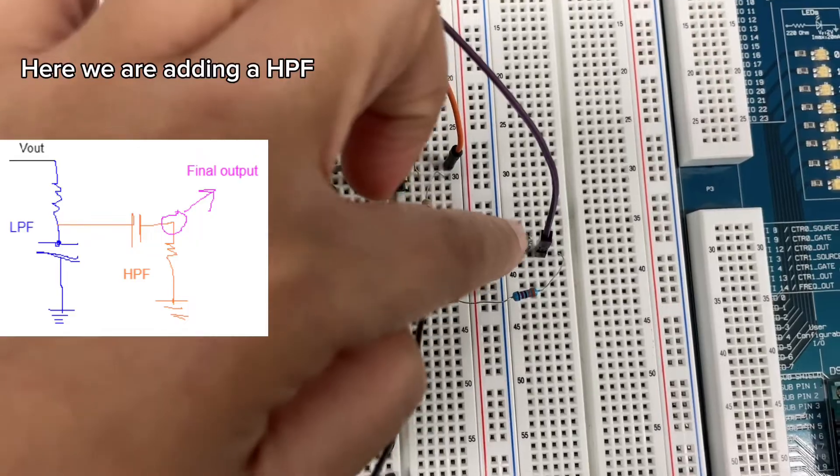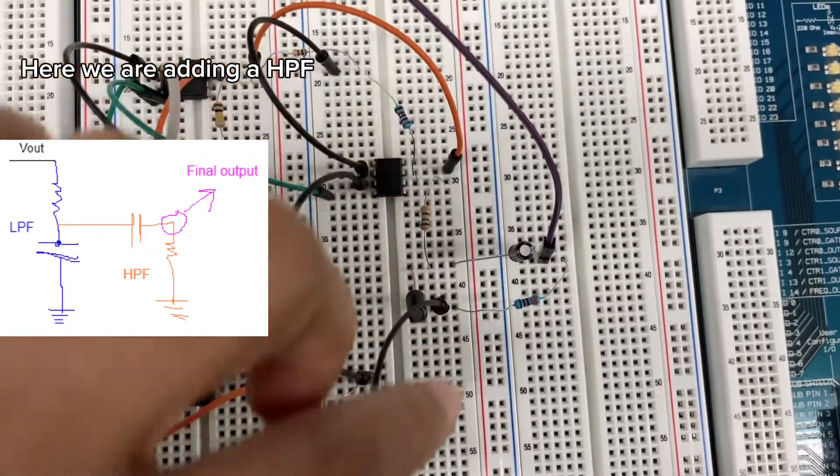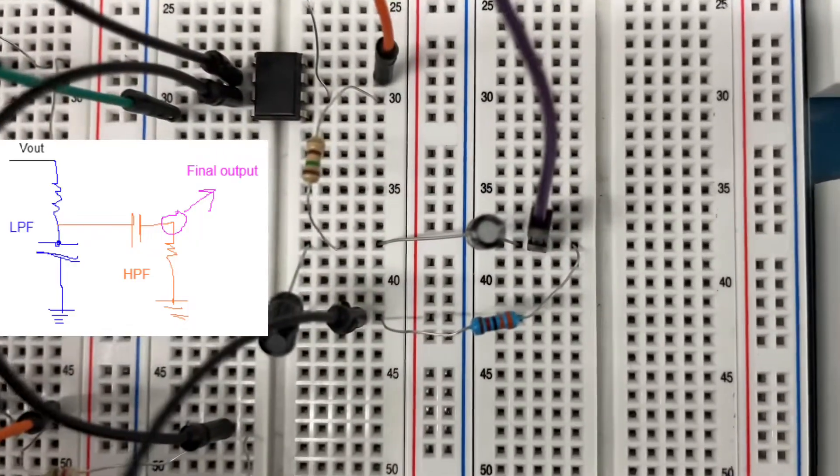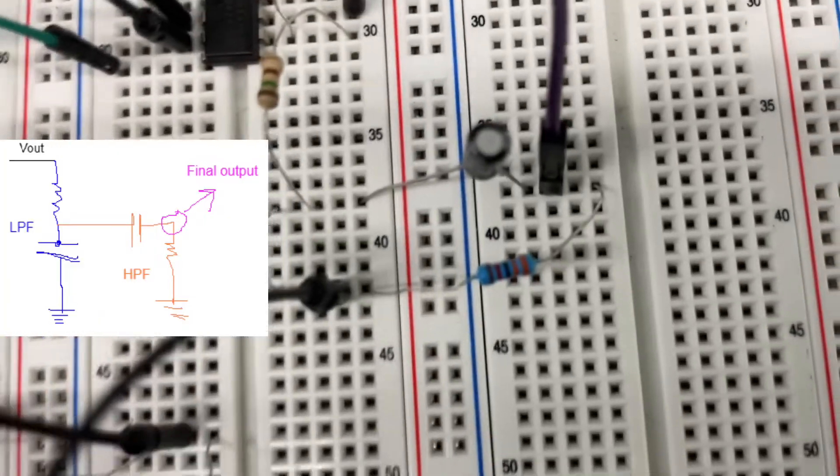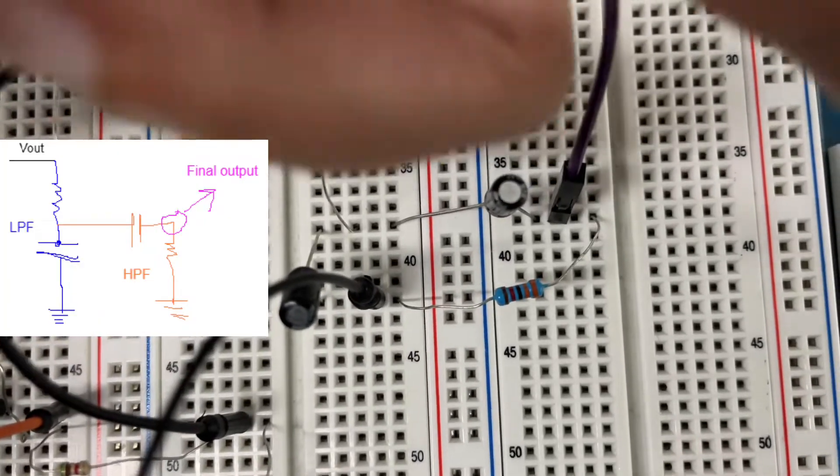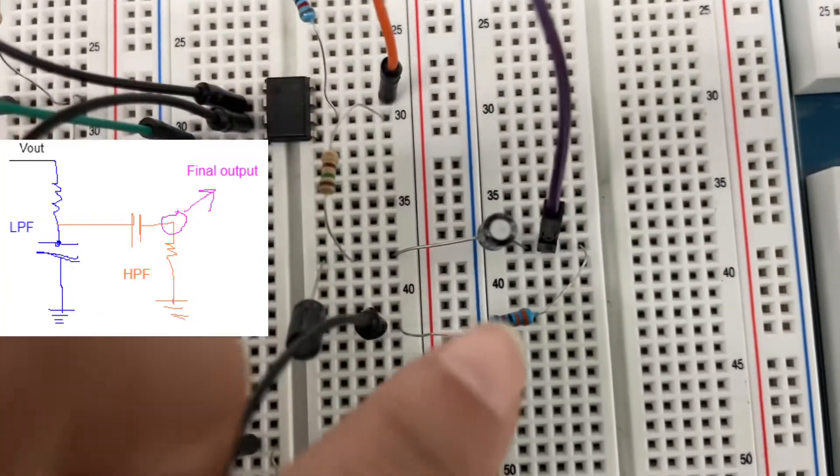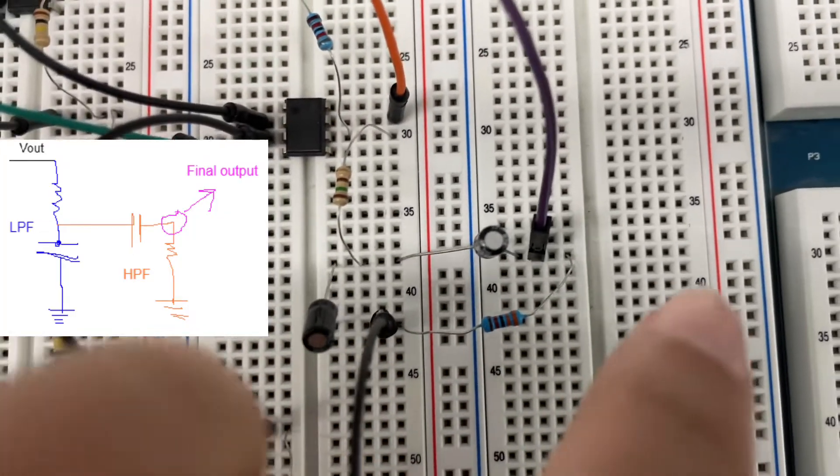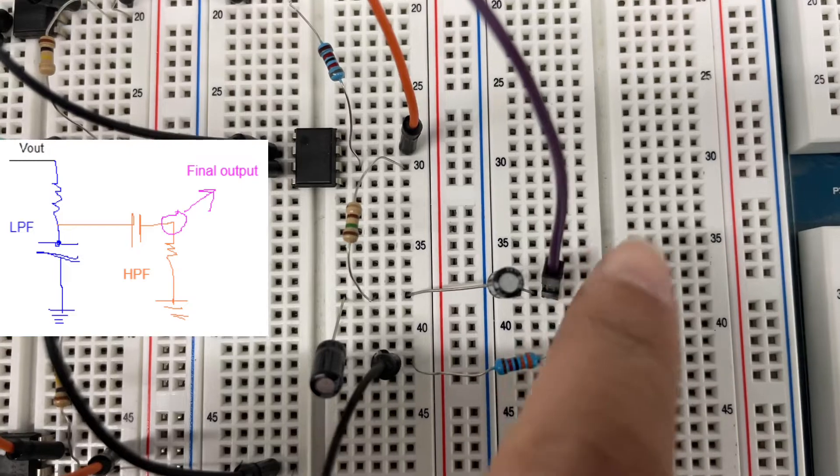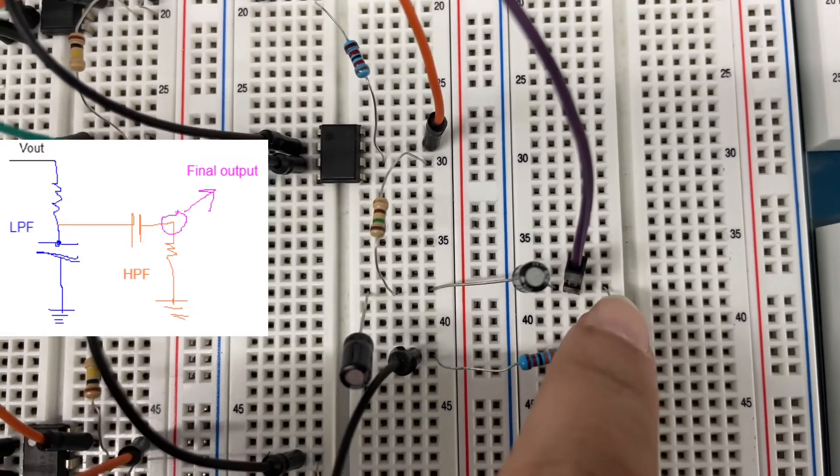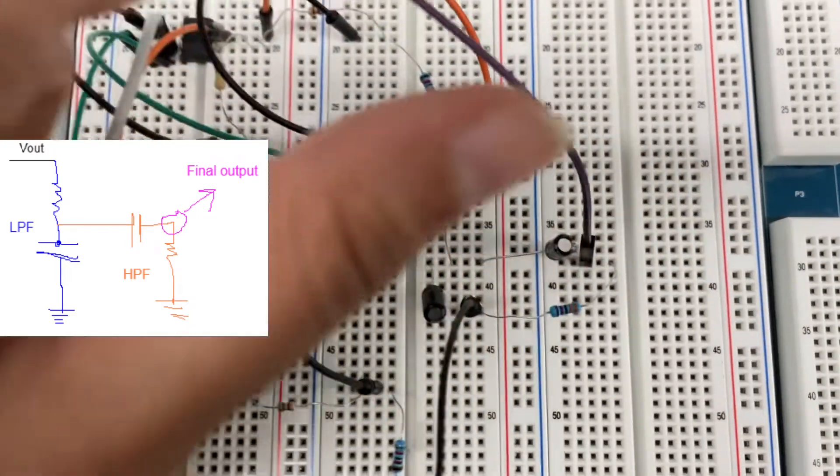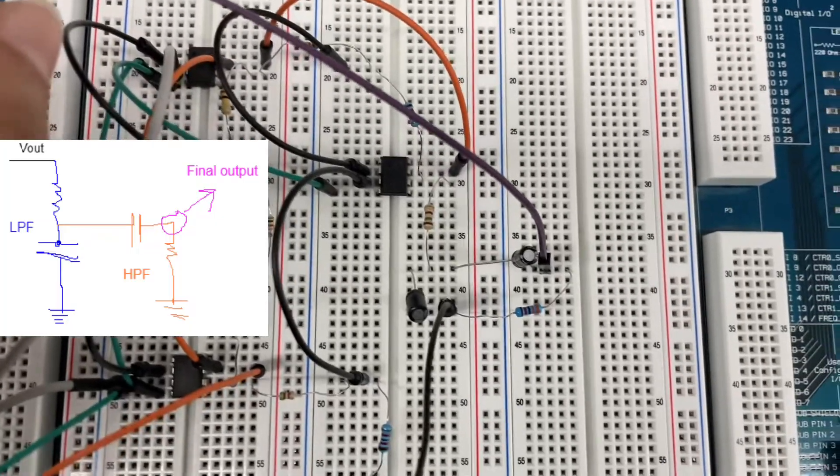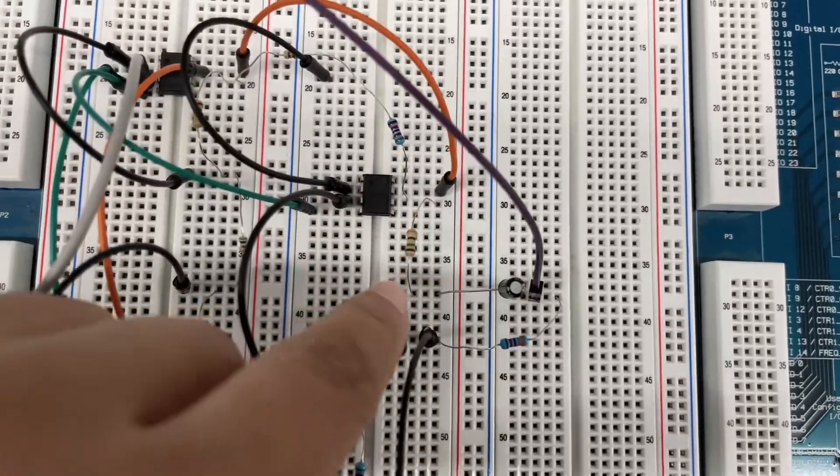The output between the resistor and capacitor is taken to a CR circuit which is a high pass filter. This is the C and this is the R of the high pass filter. The output is this wire, which is the signal after going through the high pass and the low pass.